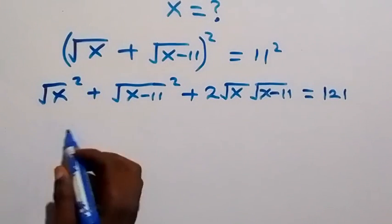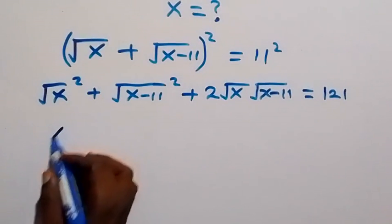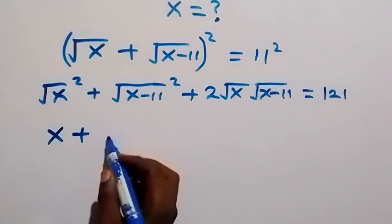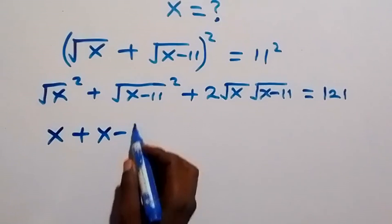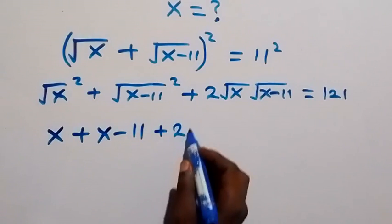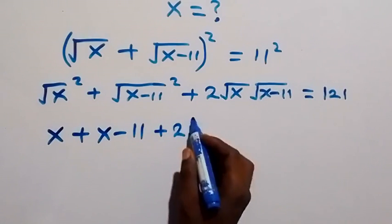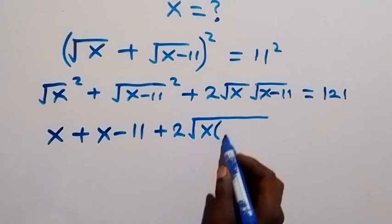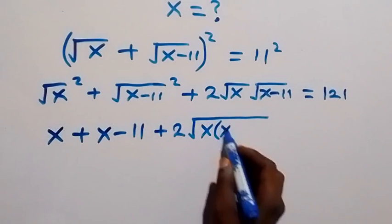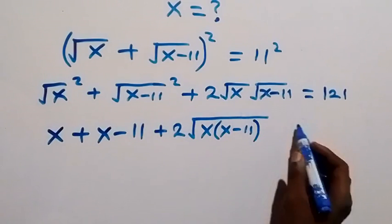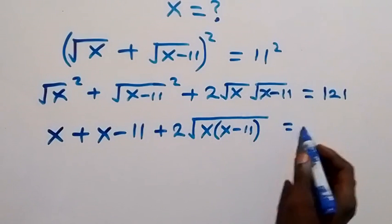The square cancels the square root, giving us x; and the square cancels the square root on the second term, giving x − 11; plus 2 times √(x(x − 11)) under one root.